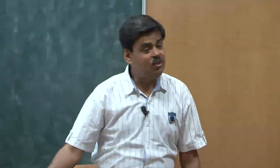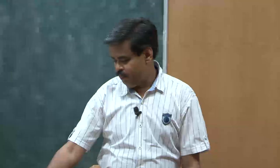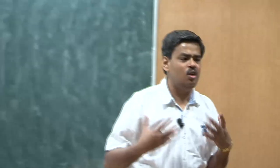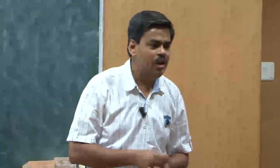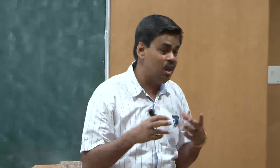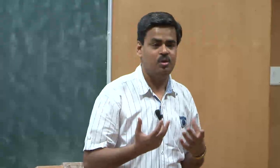Another symptom is deceitfulness, as indicated by repeated lying, using of aliases, or conning others for personal profit or pleasure. By default, you have an inbuilt tendency of being deceitful. You keep on lying, you keep on cheating, and you derive pleasure out of doing that.